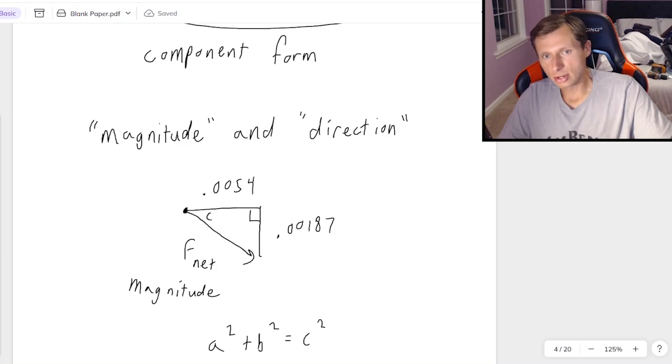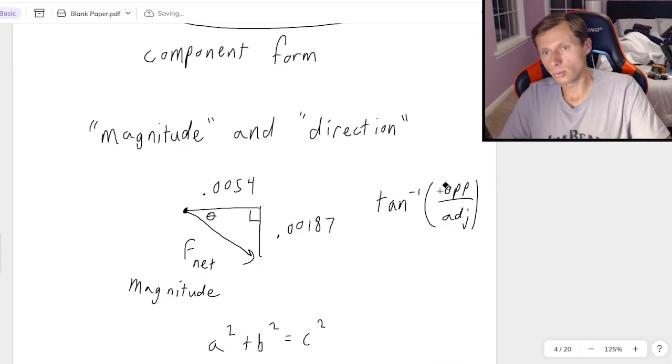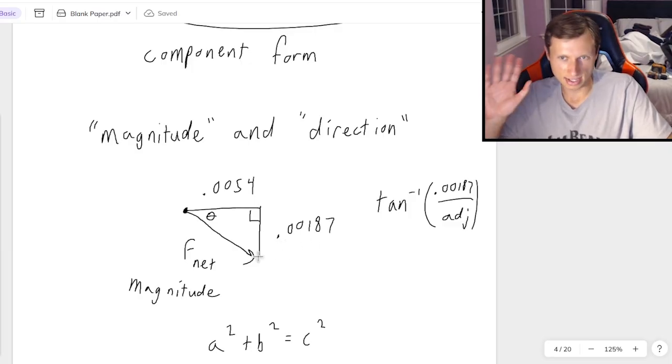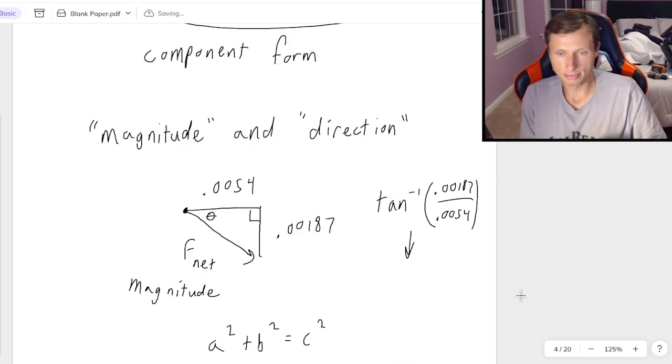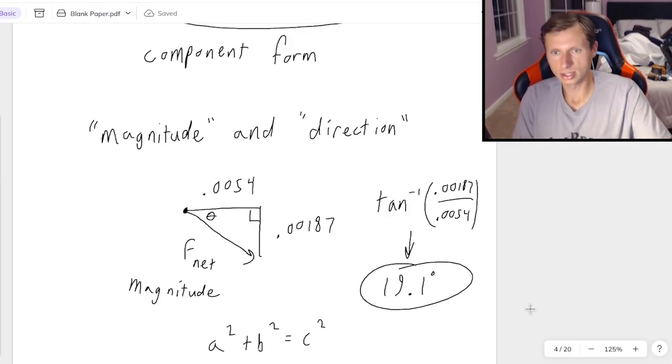But then if I want the direction, look at this triangle again, there's my angle theta. I always draw it next to the origin. And if I want to find theta, then that's going to be inverse tangent of the opposite leg over the adjacent leg, which in this case, the opposite leg is going to be the 0.00187. Yes, I know that was negative. But I already know that was pointing downward. So I've already taken that into consideration. And the adjacent leg is going to be the 0.0054. Then I'm just going to plug this in a calculator. Make sure your calculator is in degrees. And we get 19.1 degrees.